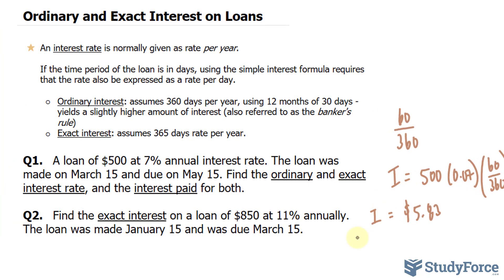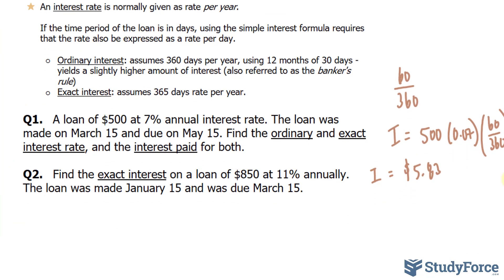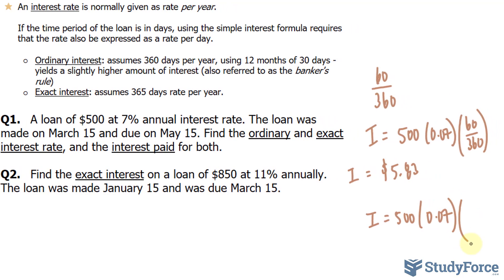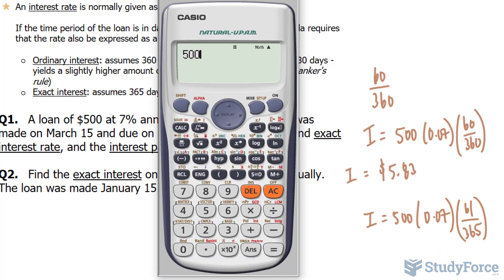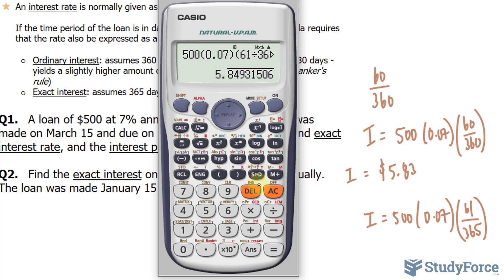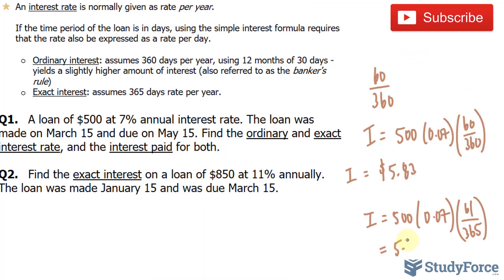Now, if we wanted to find the exact interest, there are exactly 61 days between March 15 and May 15. We use the same formula: 500 times 0.07 — that's the annual rate — and 61 over 365. To find the exact interest, we need the exact number of days between the two dates and use 365. Using our calculator, we end up with a value of $5.84.